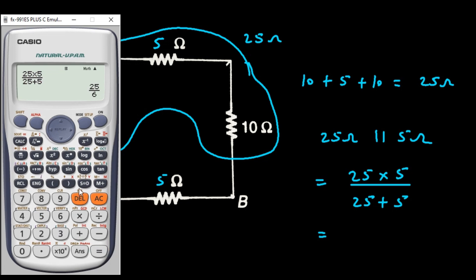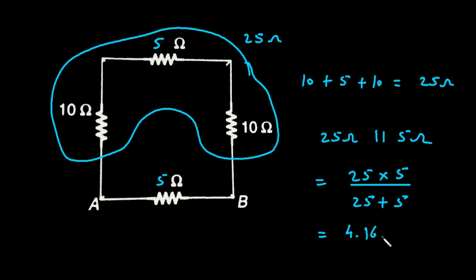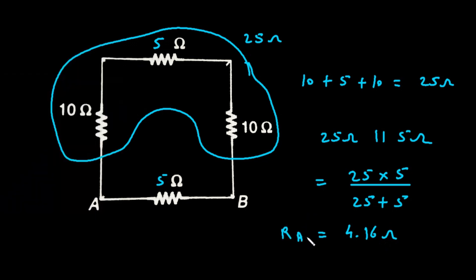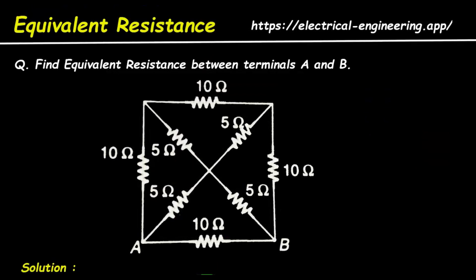So it will be 25 into 5 divided by 25 plus 5, which is 4.16 ohm or we can say it is 25 by 6. So this is the final answer for RAB, 4.16 ohm.